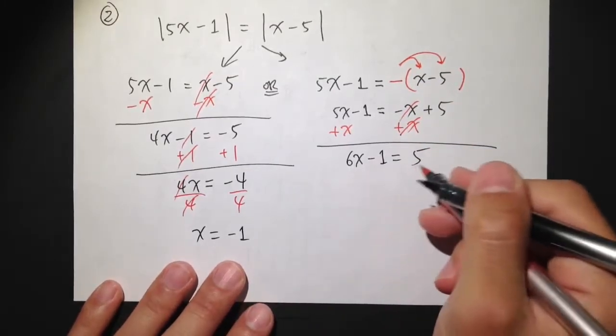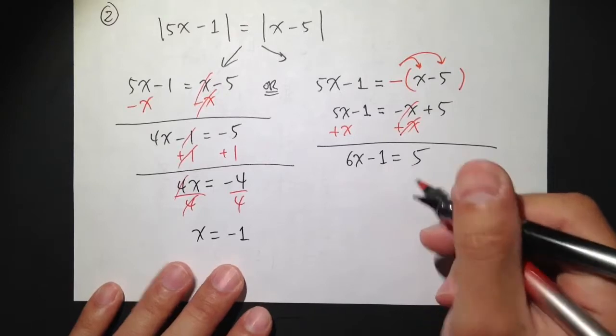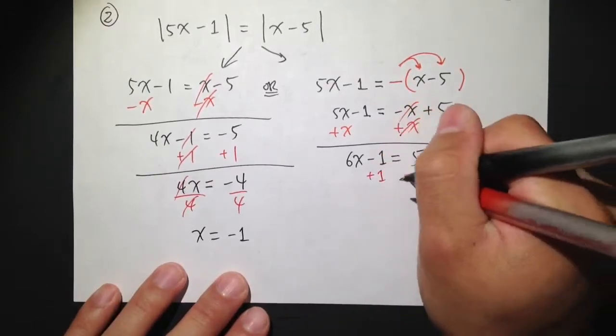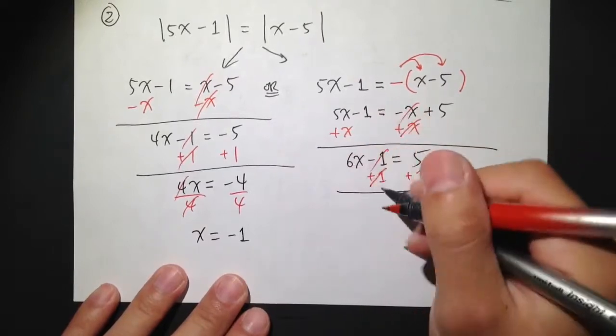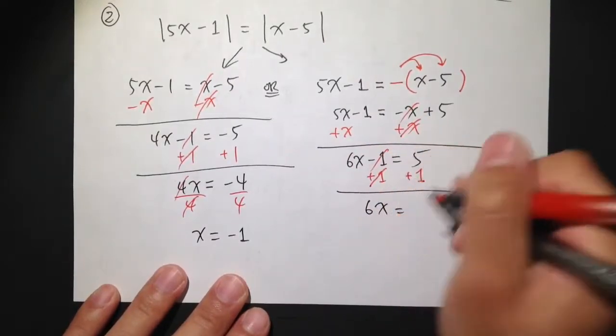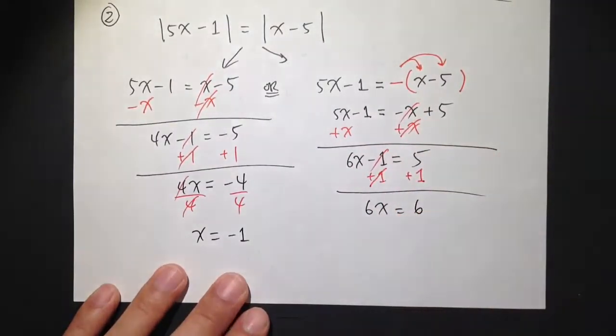So 6x minus 1 is equal to 5, let's add 1 on both sides. So cancel this out, and here I get 6x is equal to 5 plus 1, which is 6.